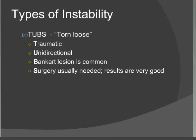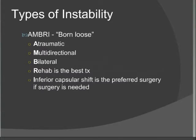On the other hand, the AMBRI group are born loose. Generally these patients have atraumatic instability, often multi-directional, can be bilateral, and can have a family history. For these patients, non-operative treatment is the best measure, so they should have a rehab and physio program. If all else fails, the operation for them is generally an inferior capsular shift.